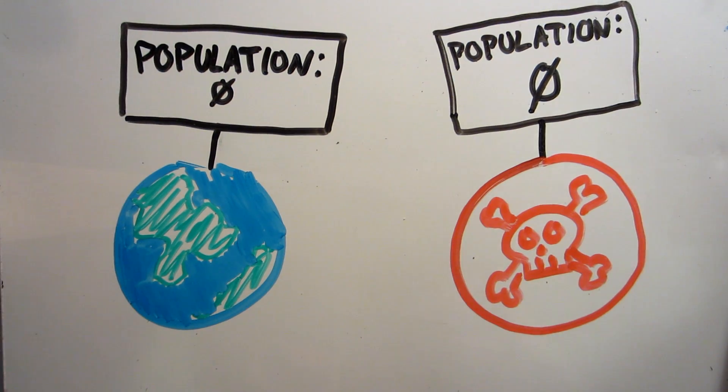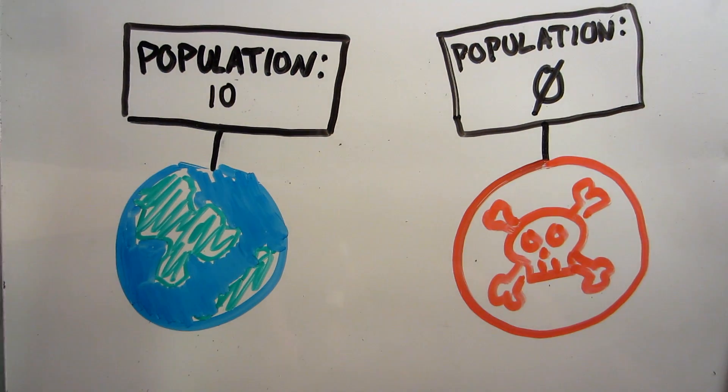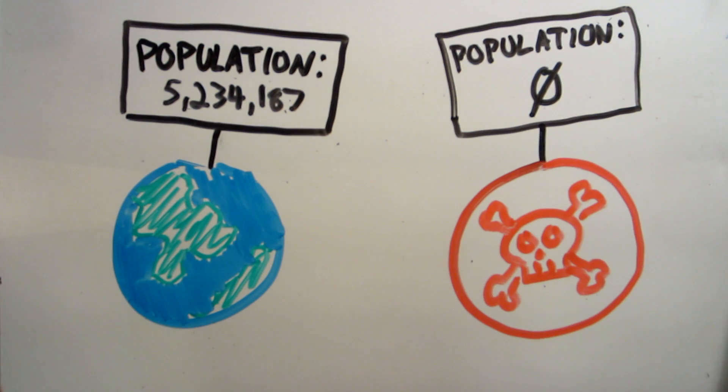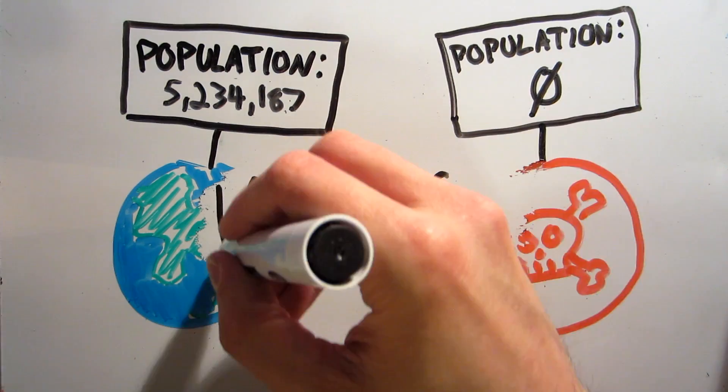The same reasoning applies to planets. A life form can only observe the kind of planet it's on after having developed on it. So none will ever find itself on a planet that's hostile to life. This concept is known as the Anthropic Principle.